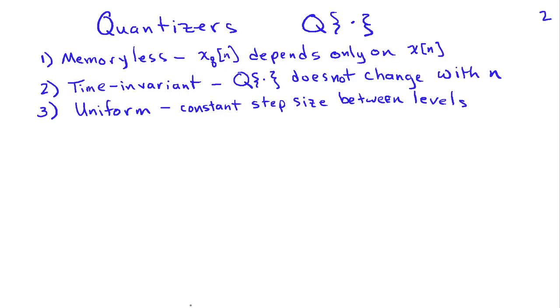So let's begin with the quantizer. Typically, quantizers used in signal processing have the following three properties. They're memoryless, in that the quantized value at time n depends only on the input value at time n. In other words, past values of the input or future values don't affect the quantization process.